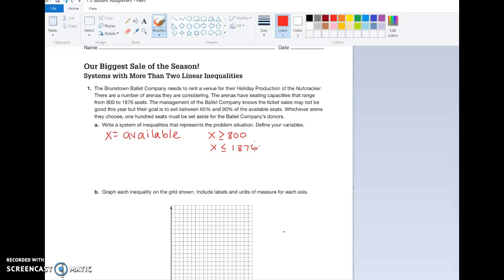Now that's actually not completely correct because according to this, 100 seats have to be set aside for the ballet company's donors. So X is going to be the available seats for tickets sold. So that means that we have to subtract 100 from each of those because those are not tickets that can be sold, right? So then in reality, what we have here is X is greater than or equal to 1,700. That's how many tickets could be sold if we chose the smallest arena. And X would be less than or equal to 1,776, which would be how many tickets could be sold if we chose the largest arena.